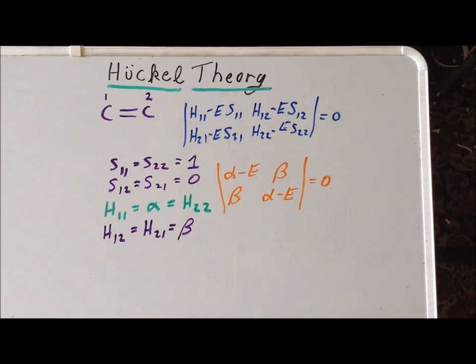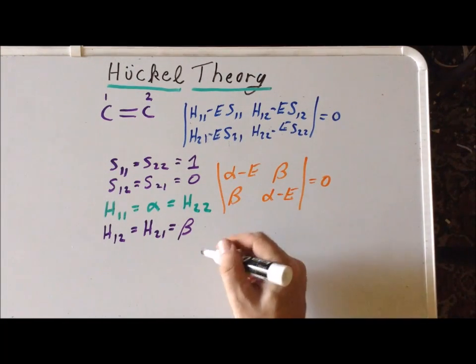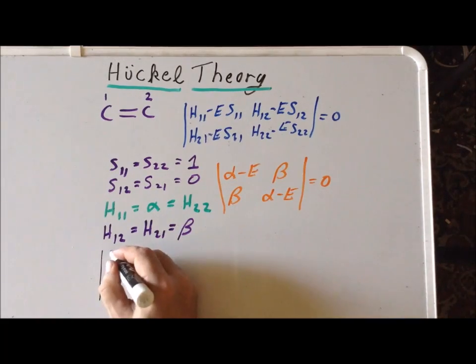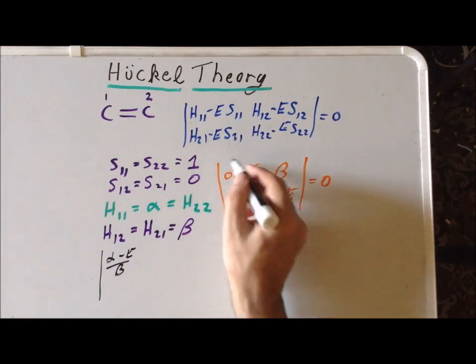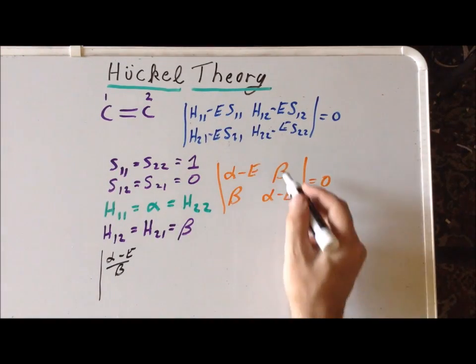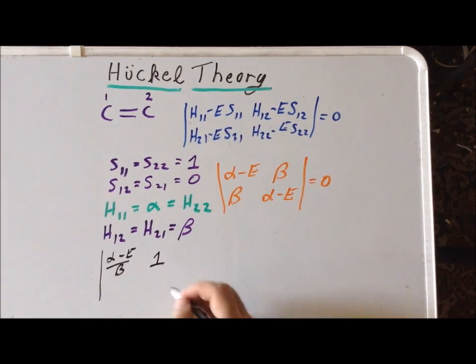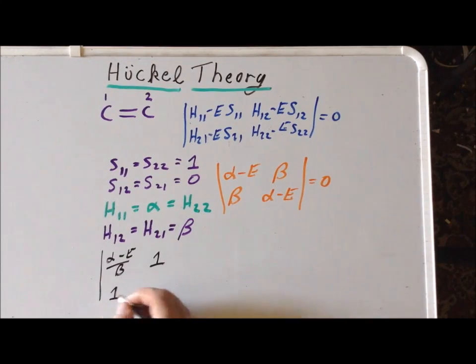Next, it's often very convenient to make the following manipulations. The first manipulation we do is divide each side by beta. So we get alpha minus the energy divided by beta as the term in this position. Beta divided by beta gives us 1. If we divide a determinant by a particular value, we take each entry and divide it by that value.